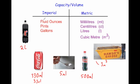So those are some examples of imperial and metric units. Imperial units are used in this country, in America, and those types of countries. The metric system is used in most countries across the world, including Europe.